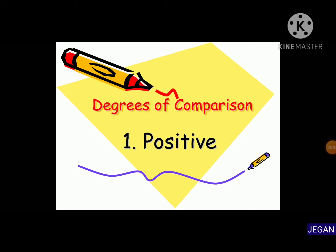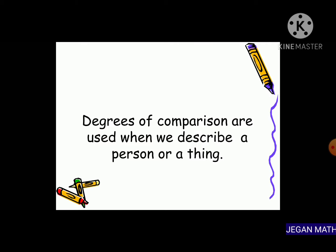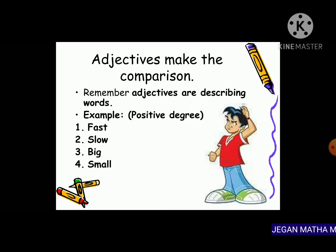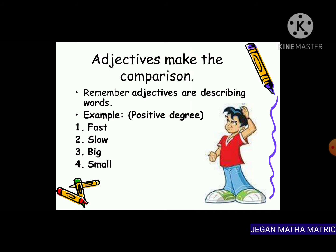Welcome to Standard English. Today we are going to learn about degrees of comparison through our book back exercise. Positive degrees of comparison are used when we describe a person or a thing. Adjectives make the comparison — remember, adjectives are describing words. For example, positive degree adjectives include: fast, slow, big, small.